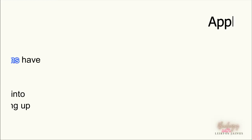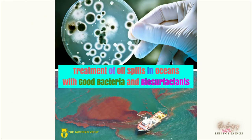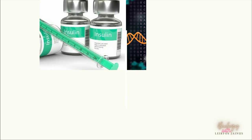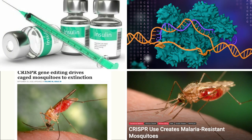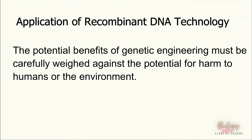In bioremediation, genetic engineering is able to produce oil-utilizing microorganisms that can grow rapidly on oil. These bacteria can break down oil into non-toxic and non-polluting materials. As we can see, recombinant gene technology has many benefits that we can enjoy and explore. However, the potential benefits of genetic engineering must be carefully weighed against the potential for harm to humans or to the environment.